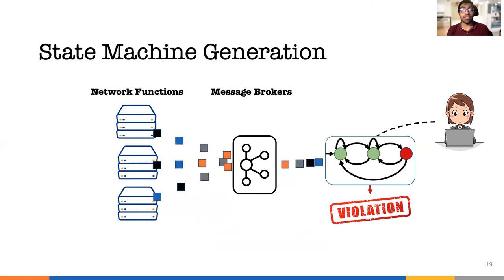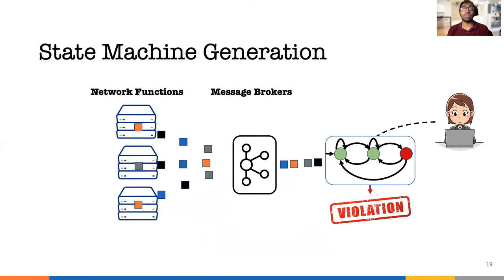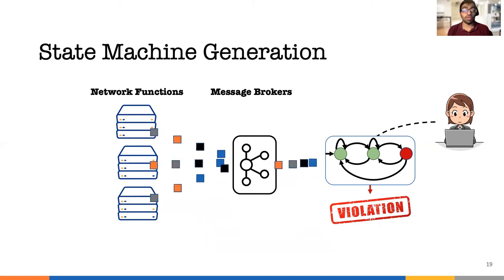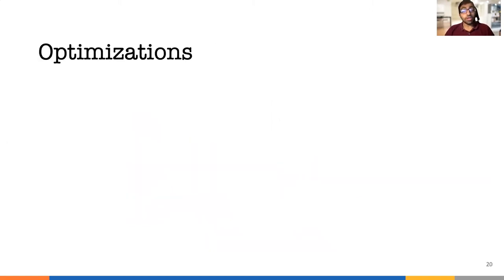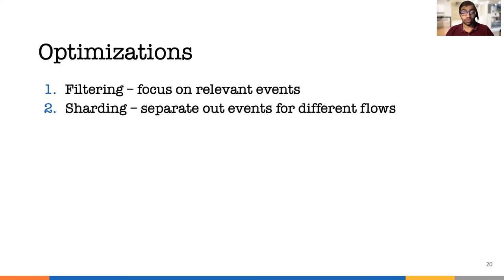However, as there are many flows in the data center, this leads to high bandwidth consumption and one server cannot handle events from all the network functions. Therefore, we make the following optimizations. First is filtering, which allows us to focus only on relevant events and save both CPU and bandwidth. Second is sharding, which allows us to separate events for different flows so we can verify invariants for different flows on different servers.